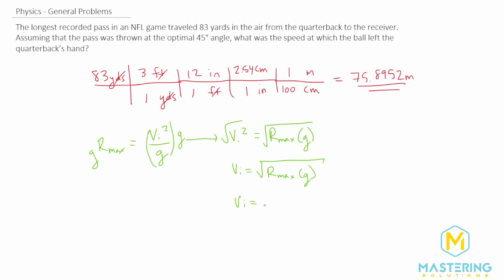So the initial velocity will be r max, they said was 83 yards, and we found was 75.8952 meters. And then we'll multiply that by gravity or g. And in this case, for this equation, we want positive g. So we'll use 9.8 meters per second squared, and then take the square root of all of that.